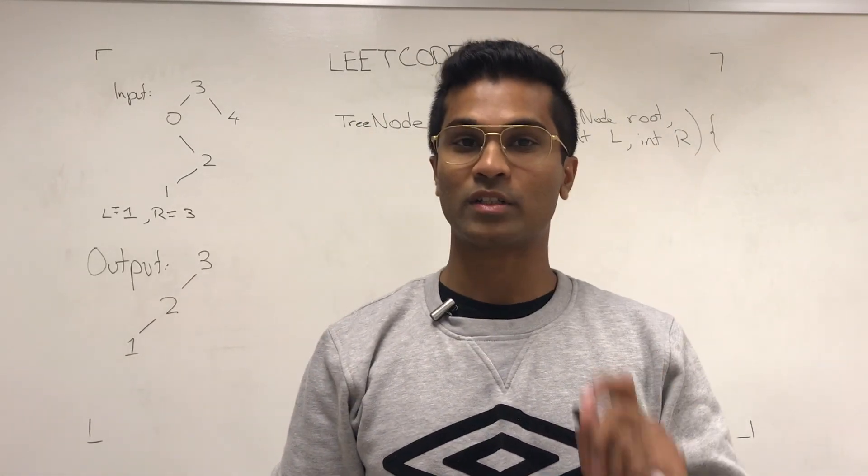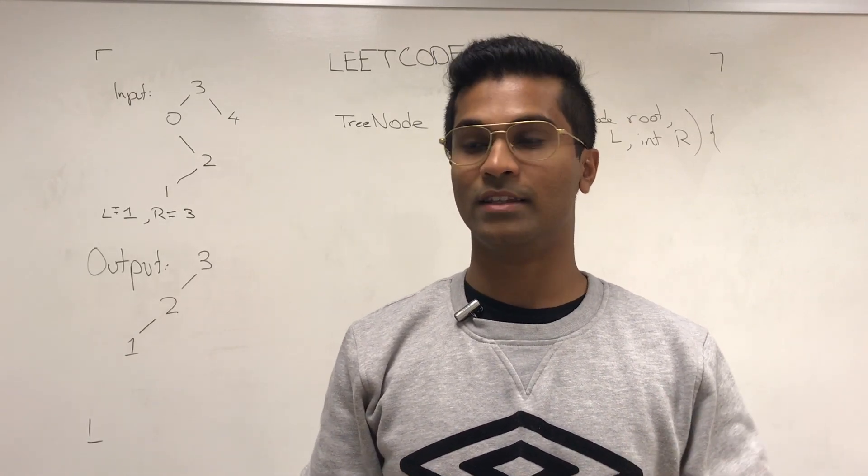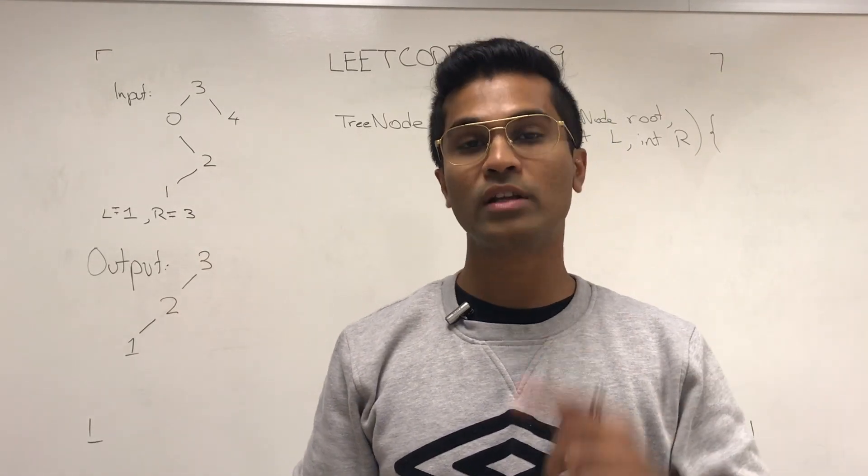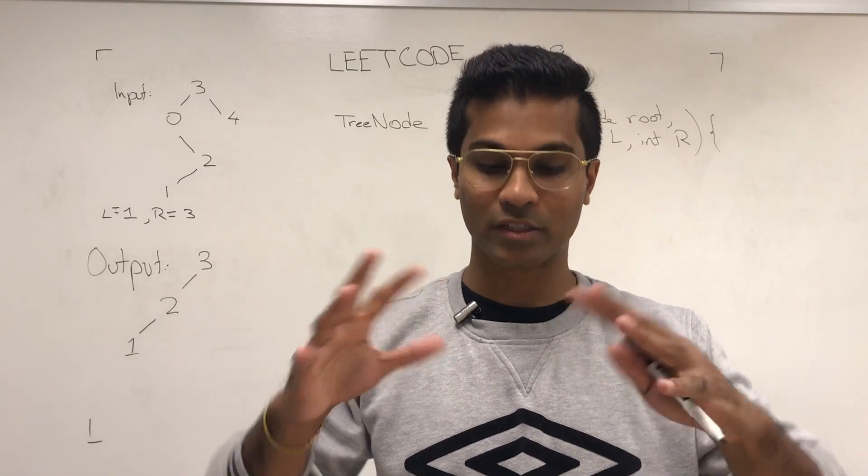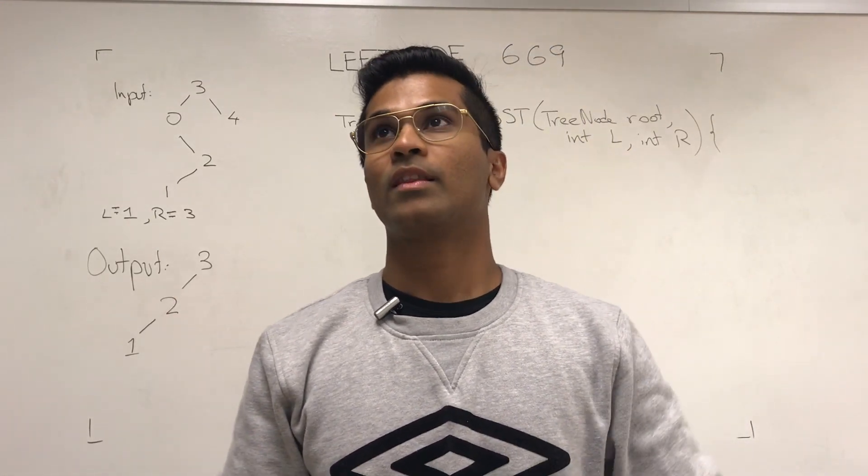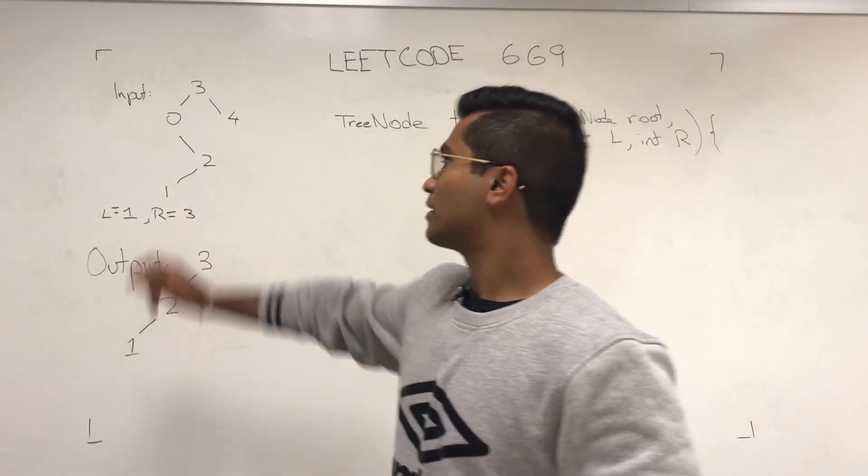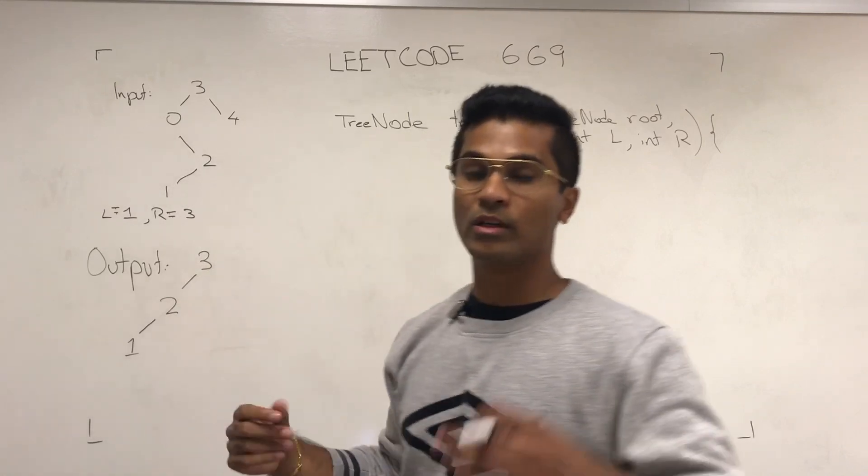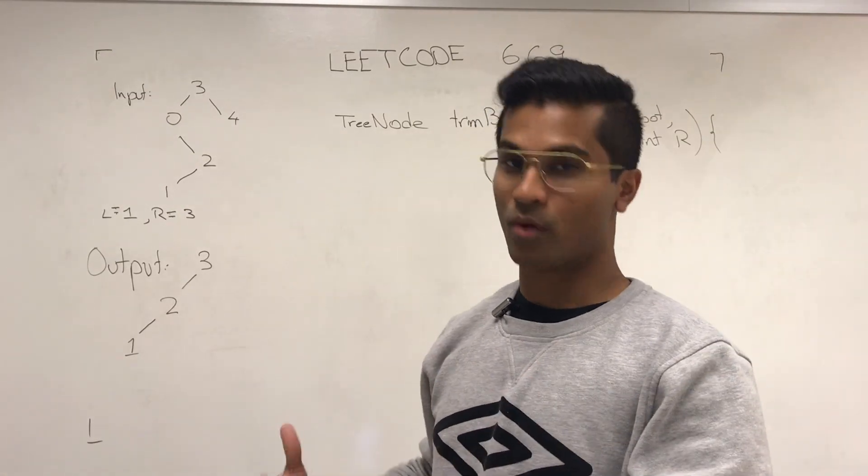Now there's pretty much one simple trick to this. You ask the node that is calling to give you back the tree node which passes the conditions of all its subtree having nodes only between left and right. Now, when we ask the root three, it's going to ask node zero and node four to give back the nodes that it should put as three's left and three's right.